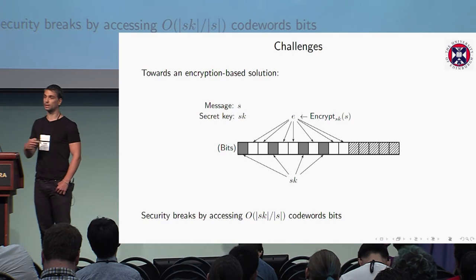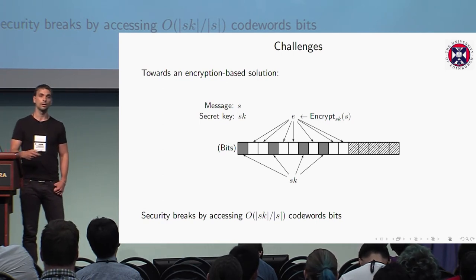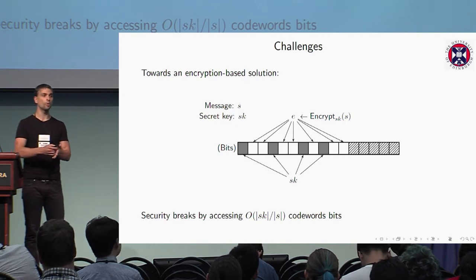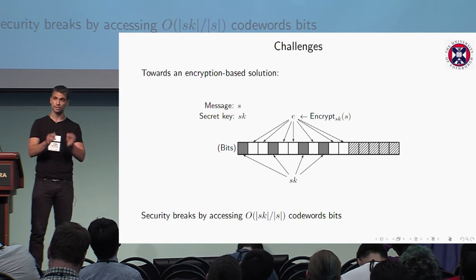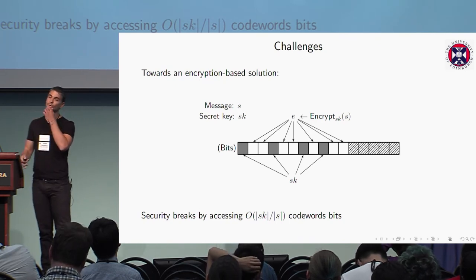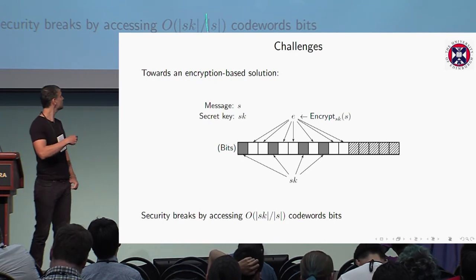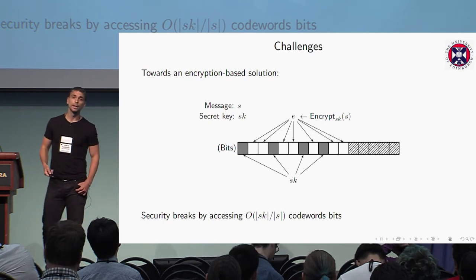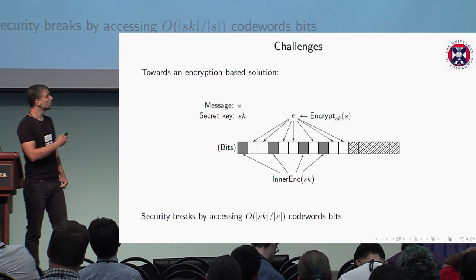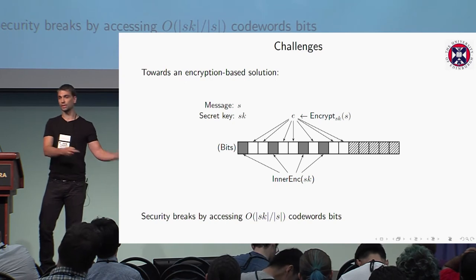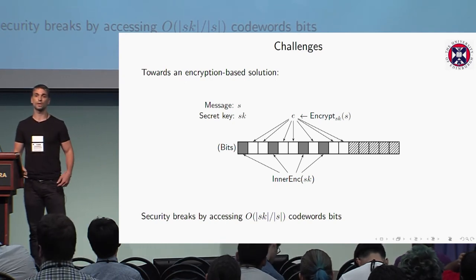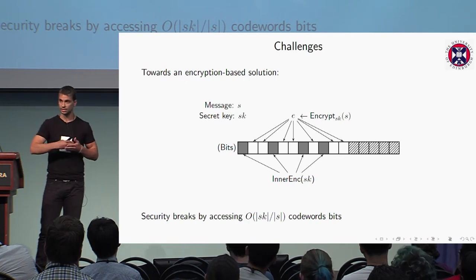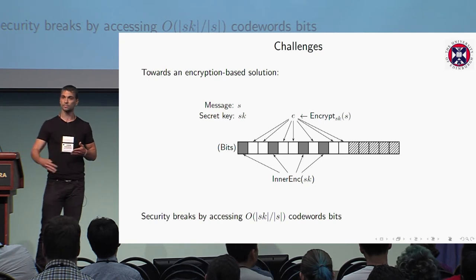Any such construction has a simple attack. The attacker simply accesses the secret key, which is short — compared to the message length, the secret key length is very small. The attacker accesses the secret key and a constant number of bits of the ciphertext, and can partially recover the message, requiring very small access rate. We might try to protect the secret key using an inner encoding instead of storing it directly in the codeword. But again we have the same problem, because any such encoding will be short — its length is independent of the message length — so we can have the same attack again.